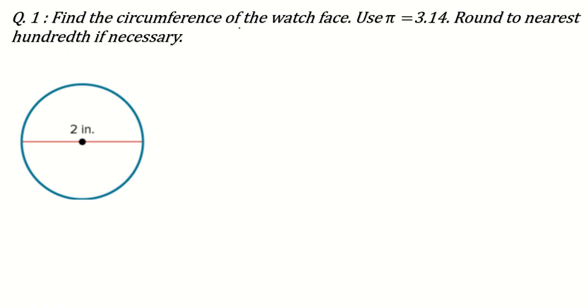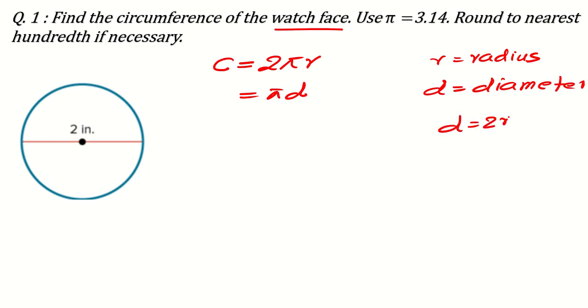This is find the circumference of the watch face. What is the formula for the circumference of a circle? Circumference C is given by 2πR where R is the radius of the circle, or you can write it as π times D also. What is D here? D is the diameter. I am sure you know this relation that diameter is twice of the radius. If you remember all these formulae, then this question will be very easy for you.